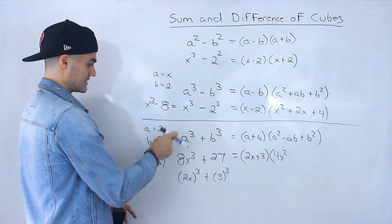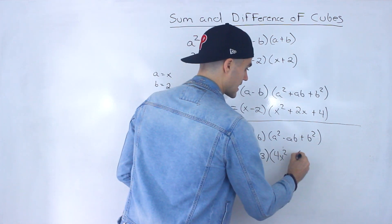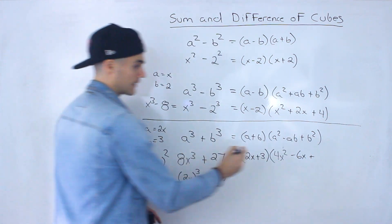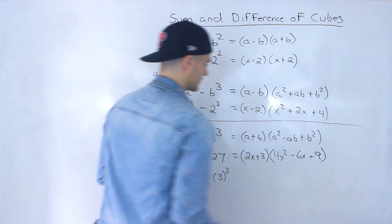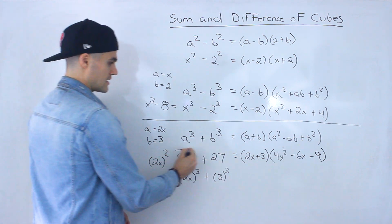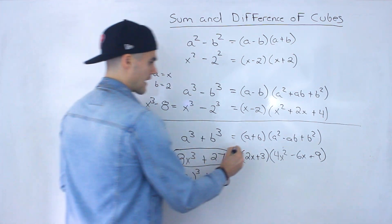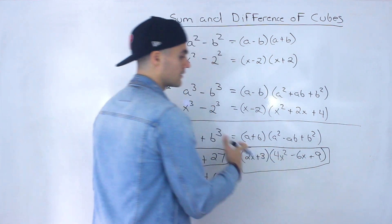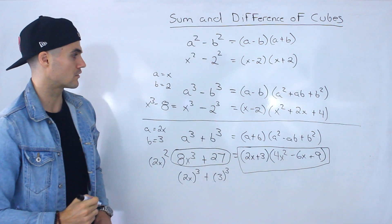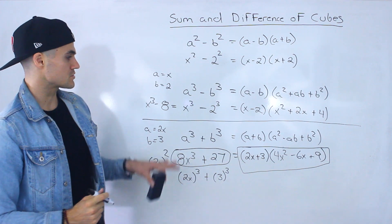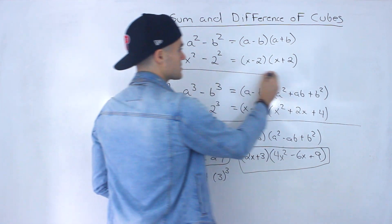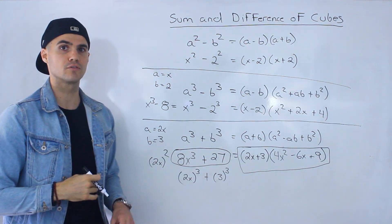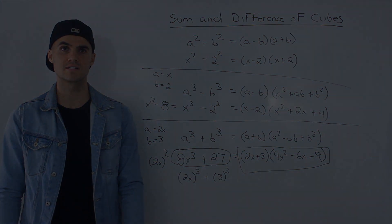And then we have minus a times b, so we'd have minus 6x plus b squared, this would end up being 9. So this here factors into that, and remember this bracket here, you can never factor further. So those are a couple of simple examples of dealing with the difference of cubes and the sum of cubes, and in the next couple of videos we're going to do more complex scenarios.